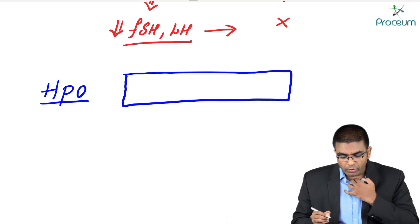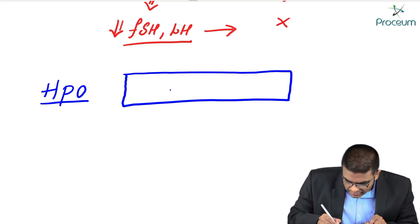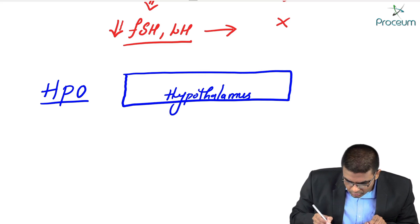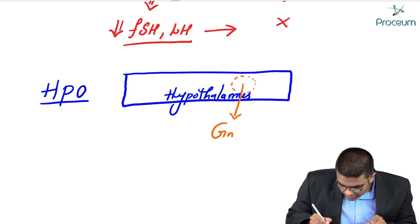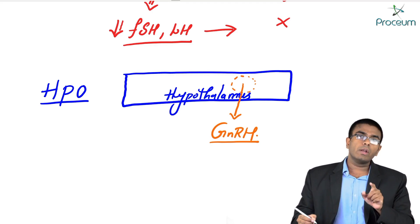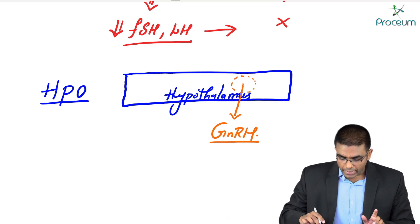In the hypothalamus-pituitary-ovarian axis, the box I am representing here is the hypothalamus. In the hypothalamus, there are a group of neurons producing GnRH — gonadotropin releasing hormone. Gonadotropin releasing hormone is produced by this group of neurons in the hypothalamus.